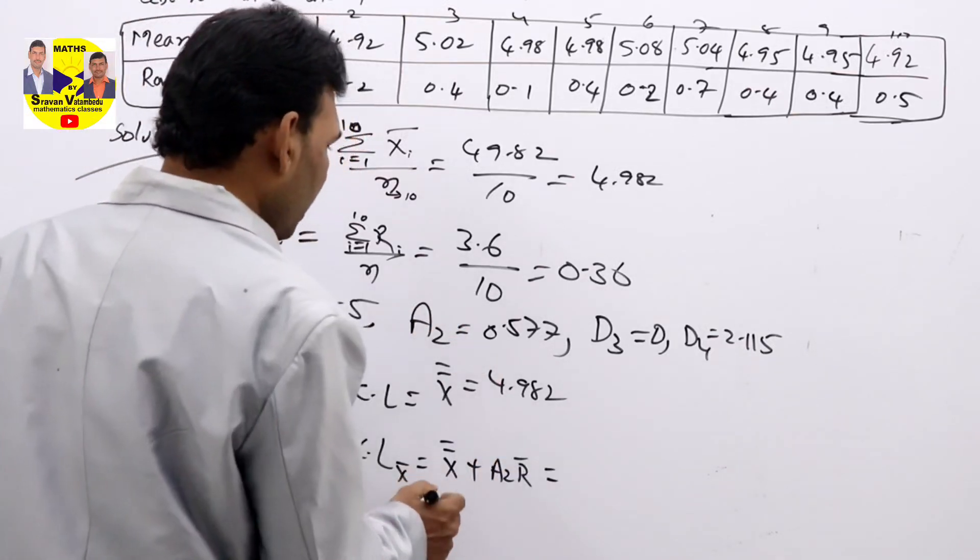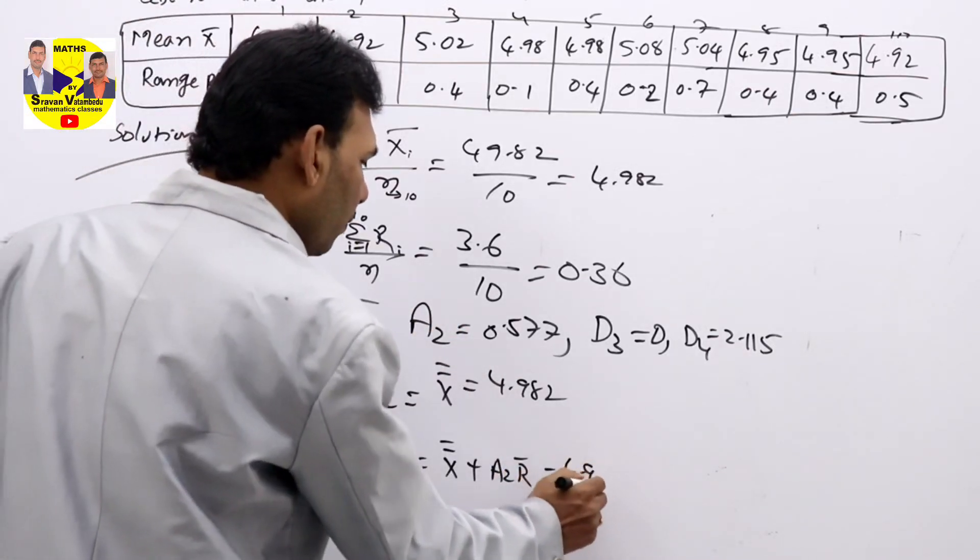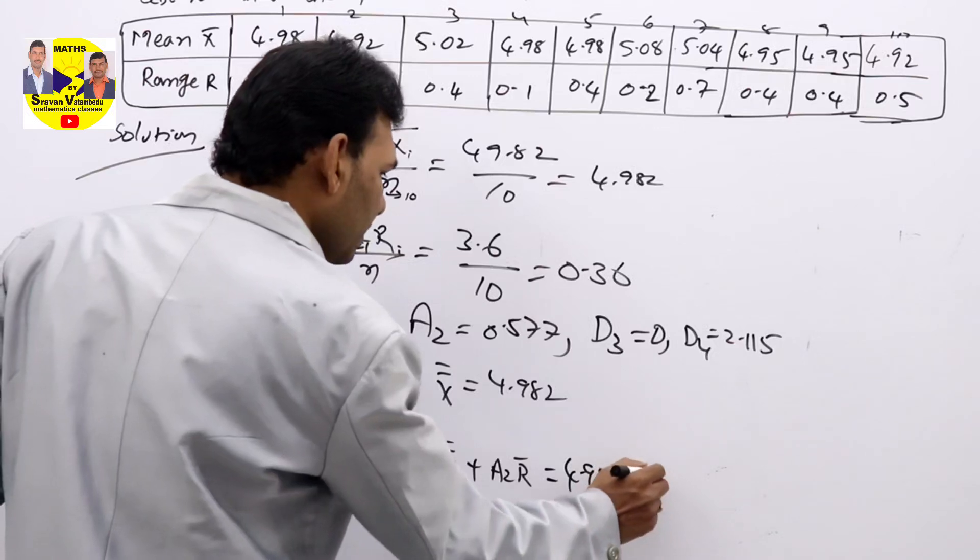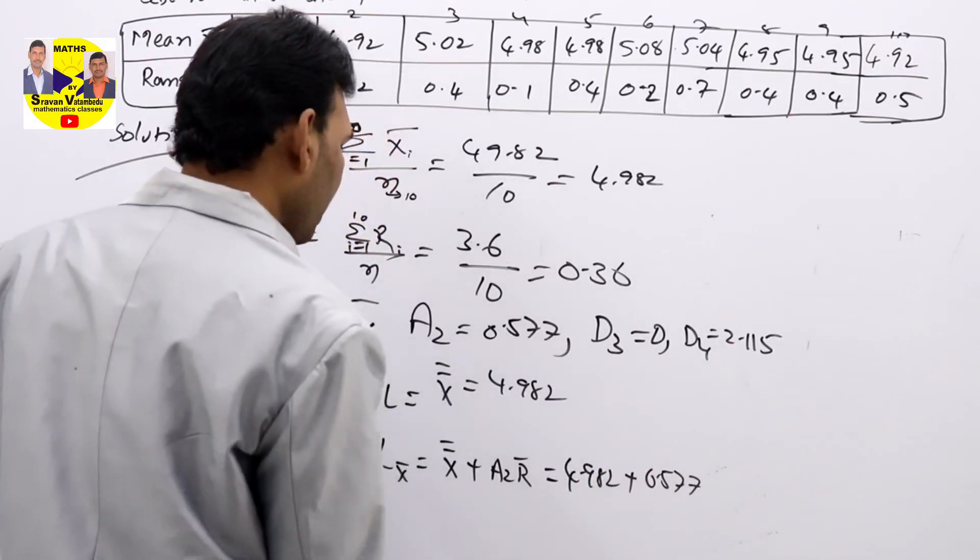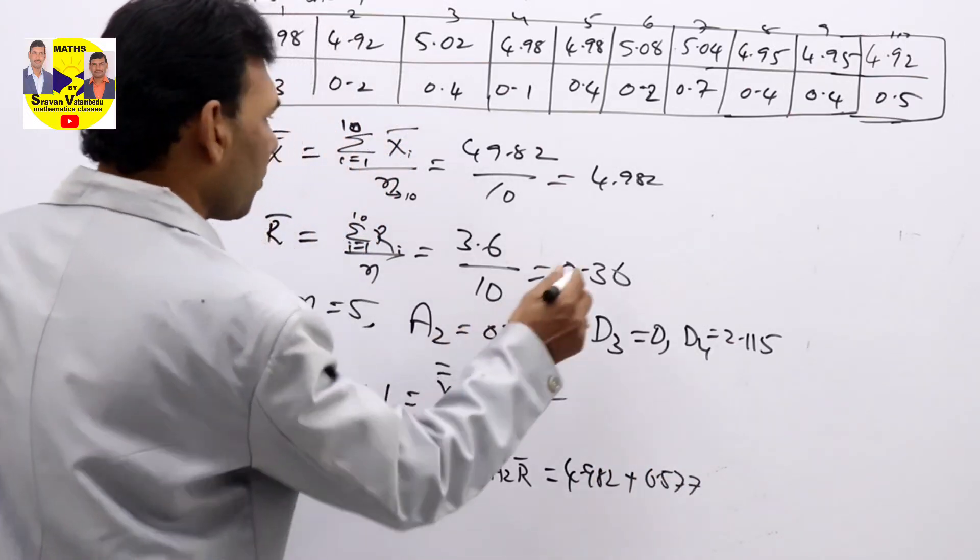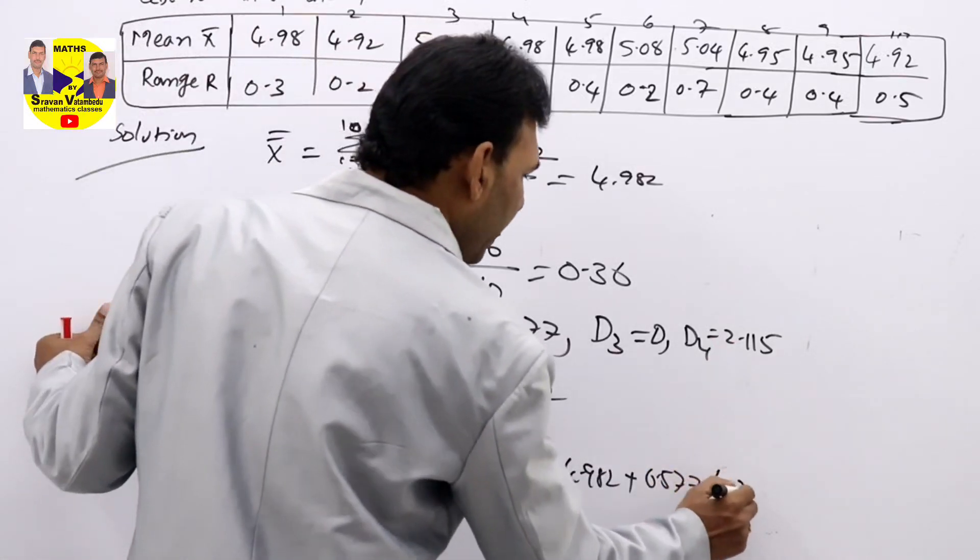So A2 value we know, already we written here. And X double bar we know: 4.982 plus 0.577 into R bar. R bar is 0.36.